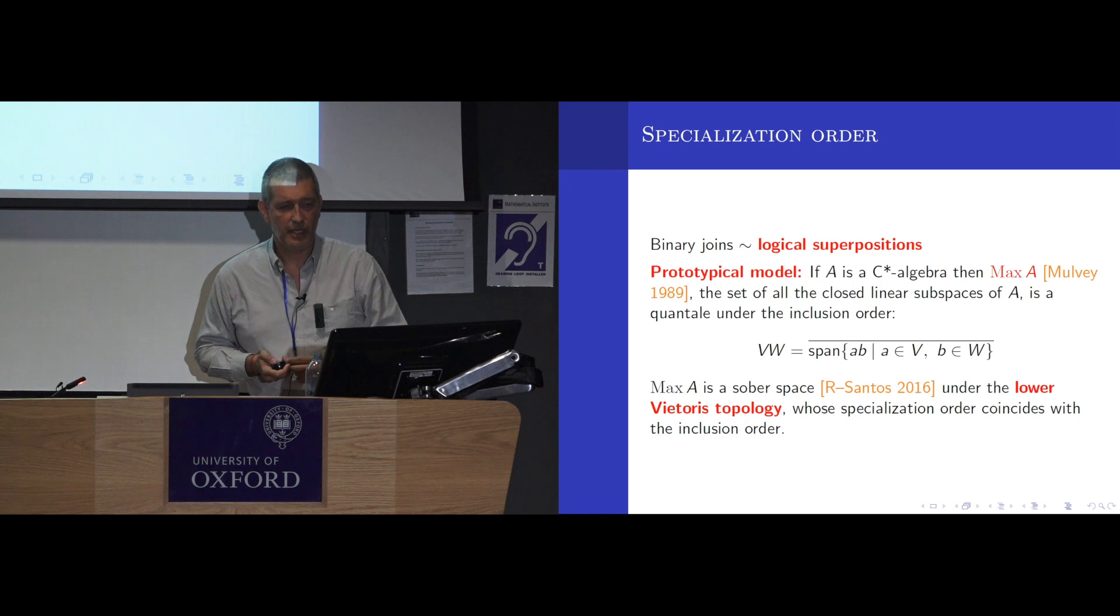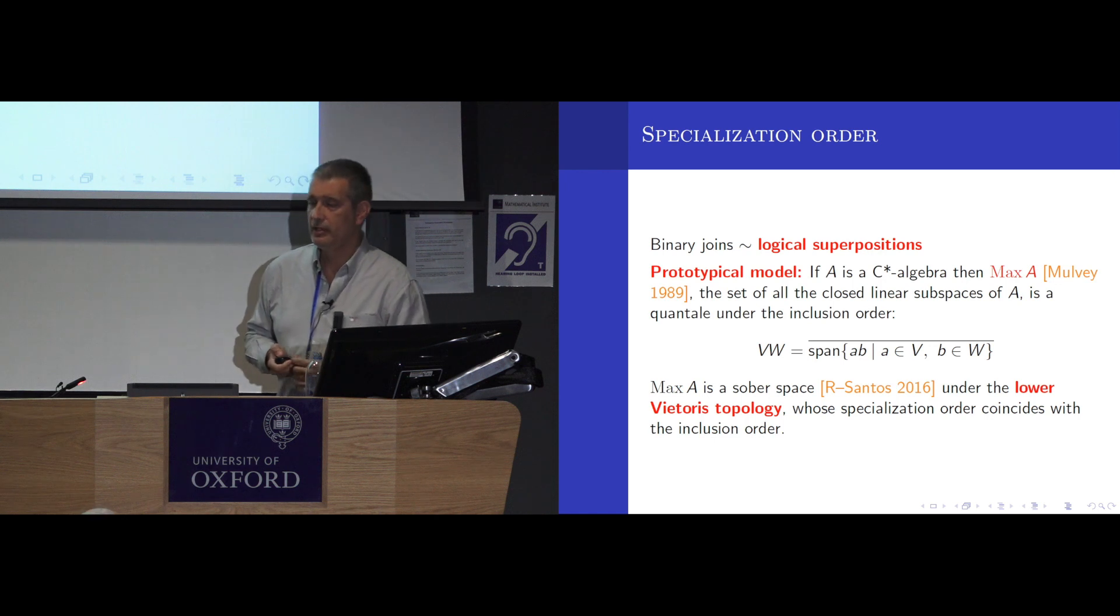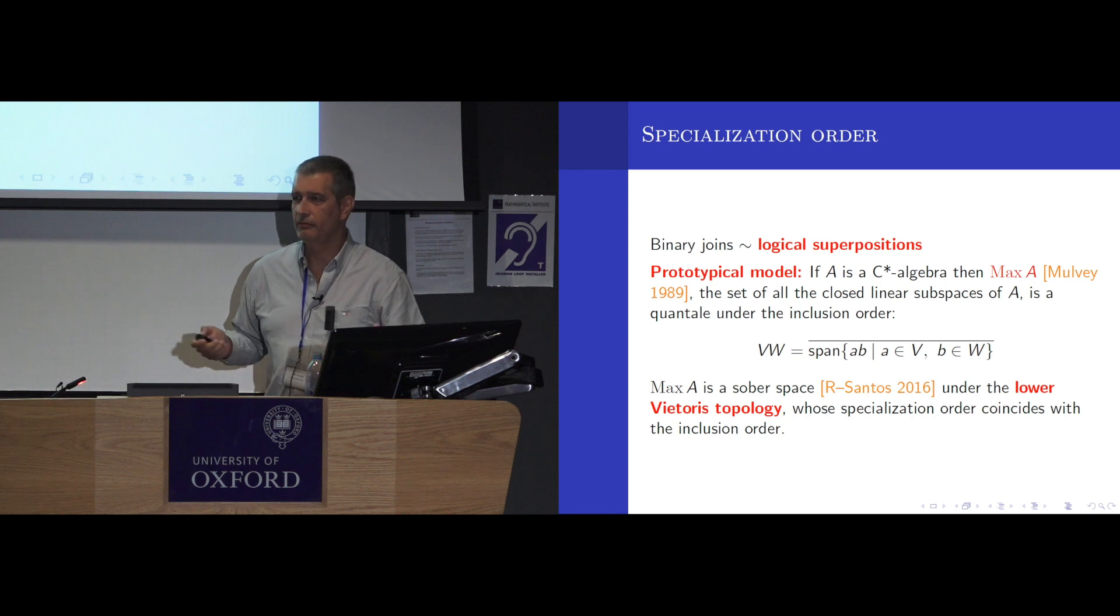The prototypical model for this is we take a C-star algebra. For people who don't know what a C-star algebra is, it's a ring with a topology with very good properties. Then take all the closed linear subspaces of the algebra and extend the multiplication in the algebra in the natural way. And that gives you a quantale. Also it is a sober space when you put in the lower Vietoris topology, which is weaker than the Scott topology. And so this satisfies all the properties that I presented before, and a bunch of others which are very useful but I don't have time to discuss.